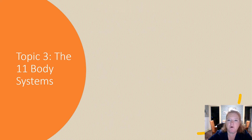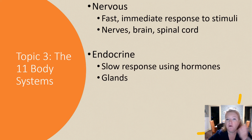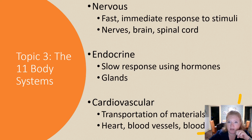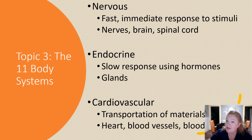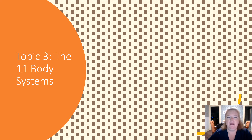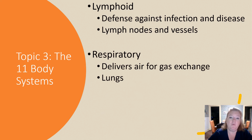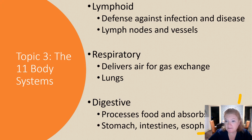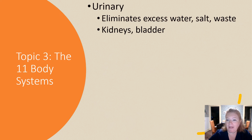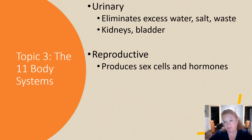Remember the difference between nervous and endocrine: nervous is the fast response system and endocrine is slow — not so slow that you die, but a lot slower than the nervous system. Then we have lymphoid, which is immune, respiratory, and digestive systems, as well as the urinary and reproductive systems.